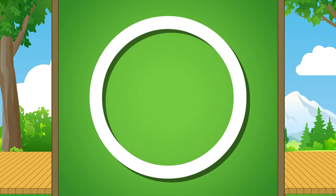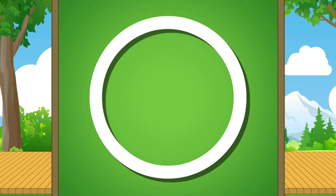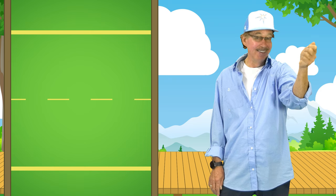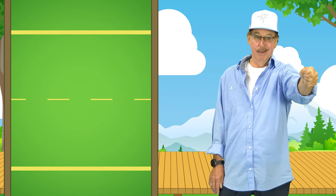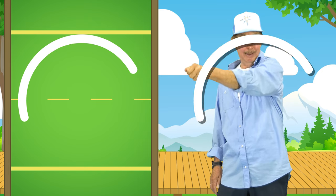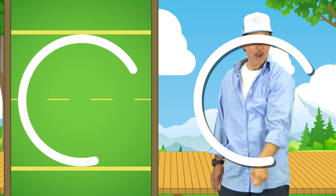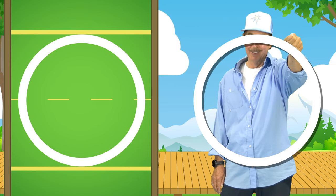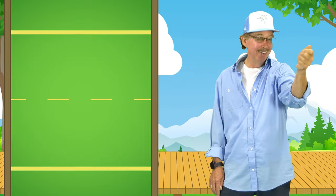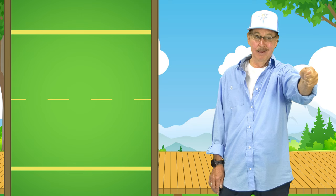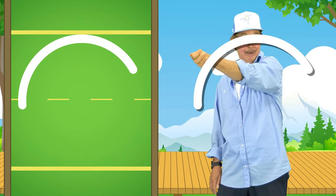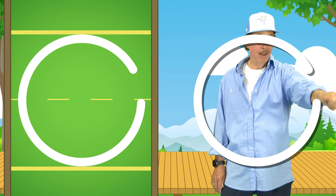This is an uppercase O. Look and see, write an uppercase O in the air like me. Start near the top, a little way down, curve it, curve it, all the way around. Start near the top, a little way down, curve it, curve it, all the way around.